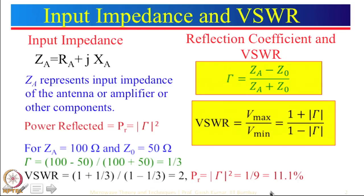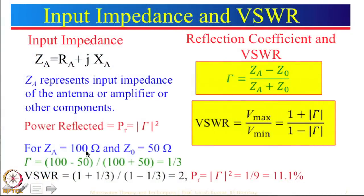Many cases VSWR equal to 2 is acceptable. That means we are accepting 11.1 percent reflected power. Many times people talk about this as approximately equal to 10 percent, but just remember it is 11.1 percent. VSWR equal to 2 is approximately considered as reflected power less than 10 percent, which is not really the case. So if load impedance is 100 ohm we are going to have this much reflected power, but if the load impedance was 50 ohm, then 50 minus 50 would be 0 and reflected power would be equal to 0.